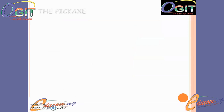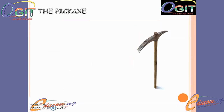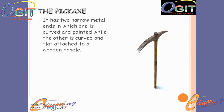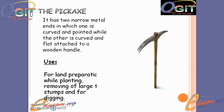Lastly, we will talk about the pickaxe. The pickaxe has two narrow metal ends: one is curved and pointed while the other is curved and flat. These narrow metal ends are attached to a wooden handle. The uses of the pickaxe include land preparation for planting, removal of large tree stumps, and digging.